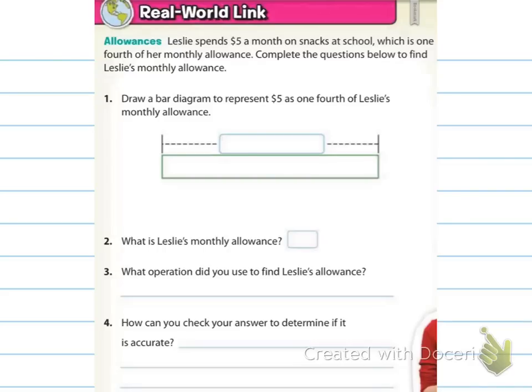We begin by looking at a real-world link. It says Allowances. Leslie spends $5 a month on snacks at school, which is one-fourth of her monthly allowance. Complete the questions below to find Leslie's monthly allowance.